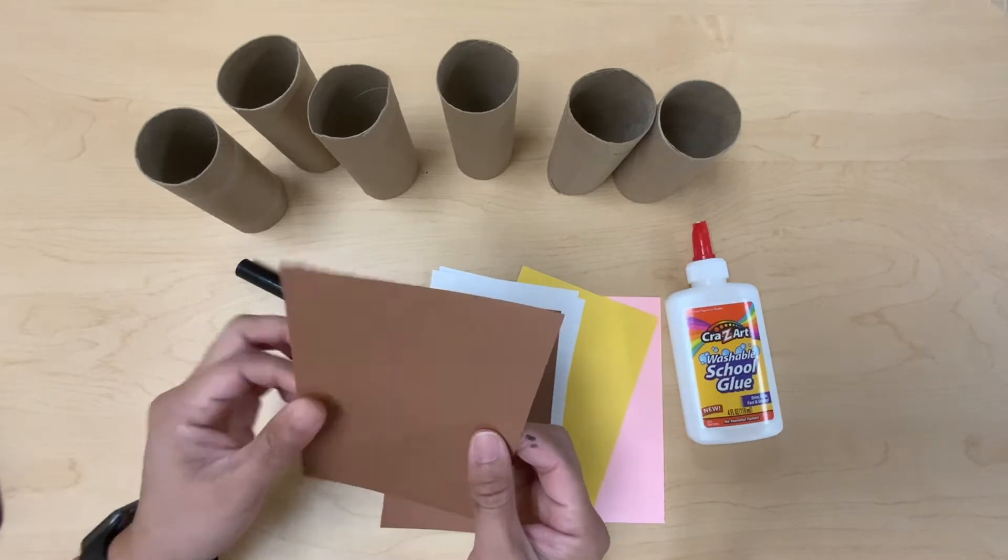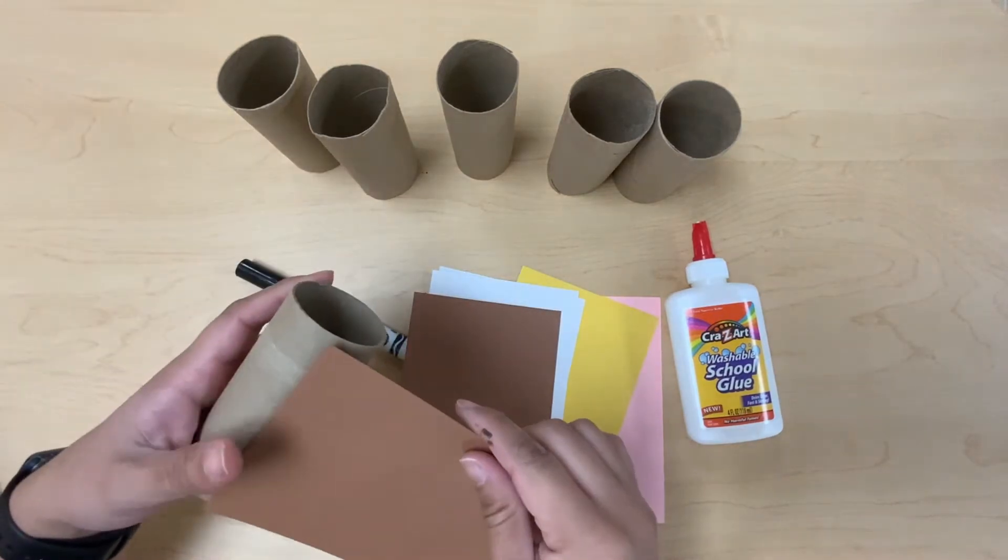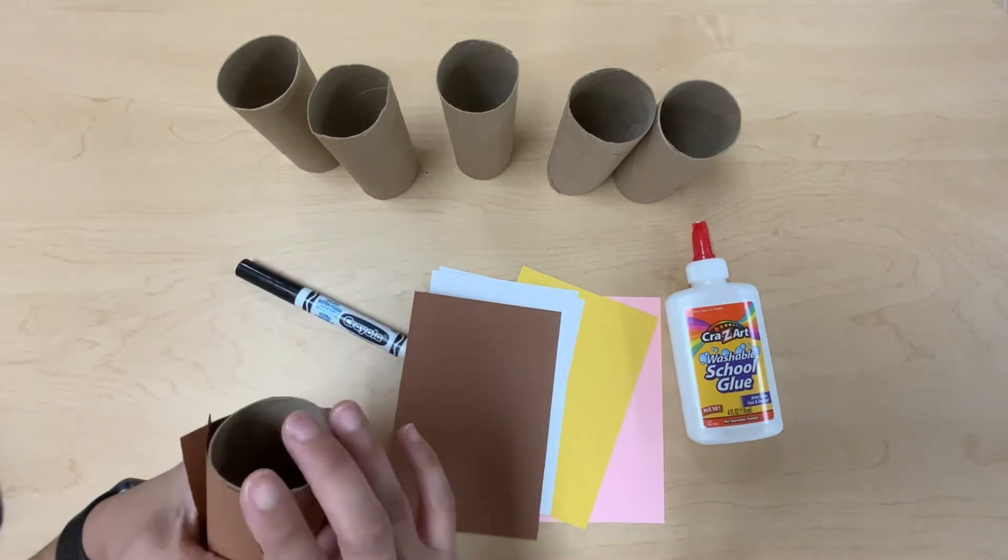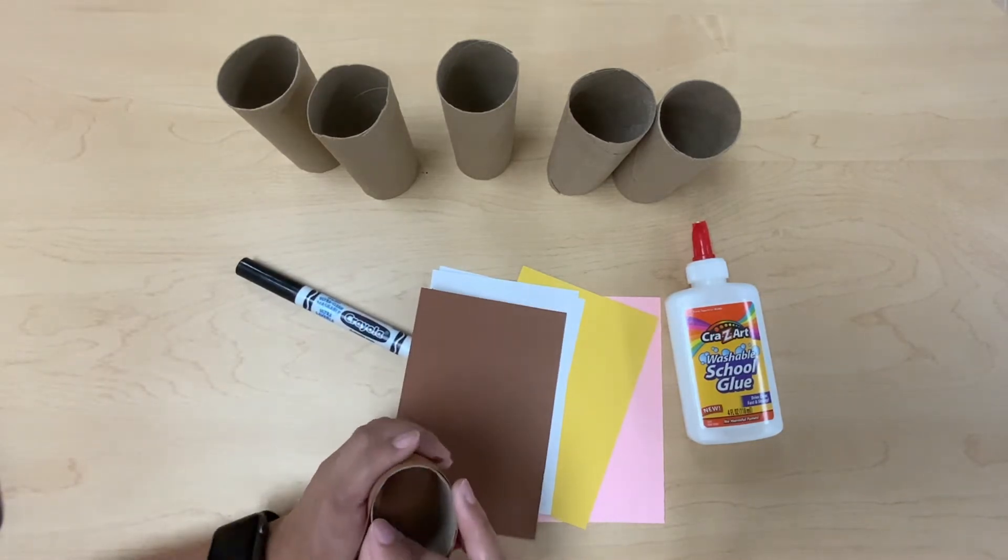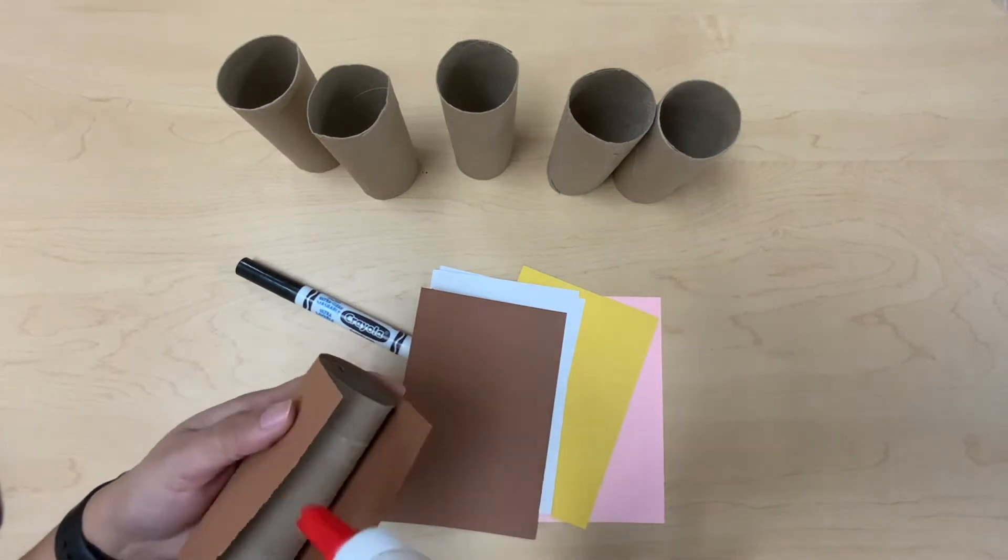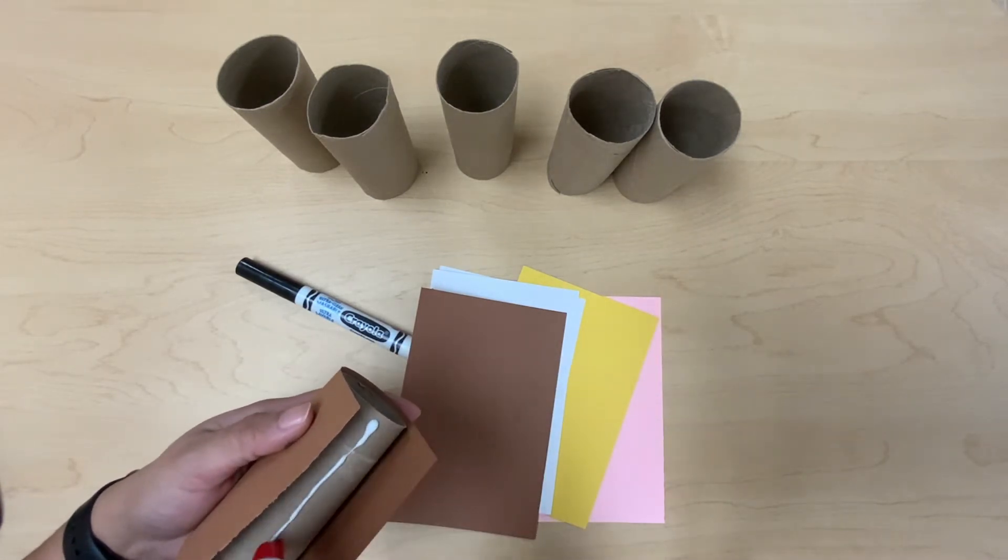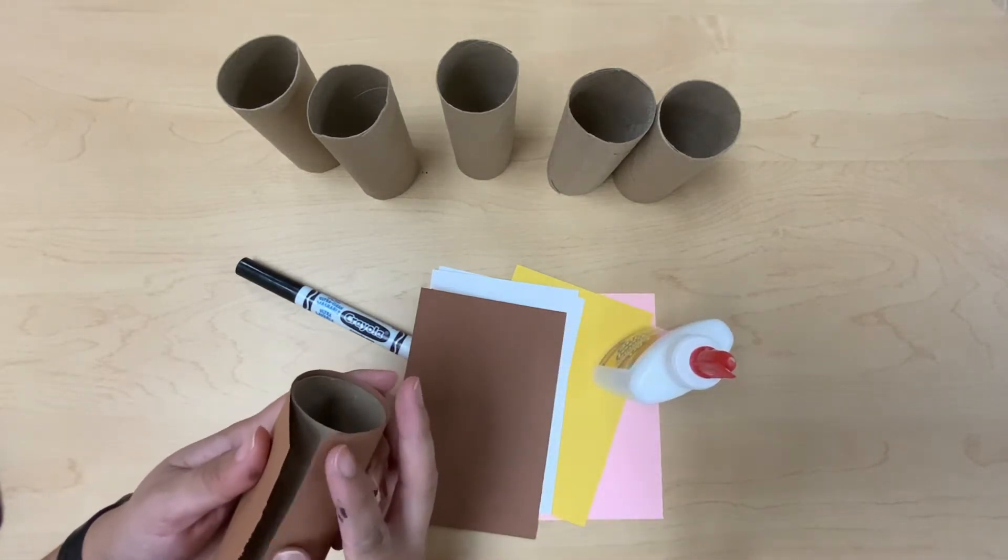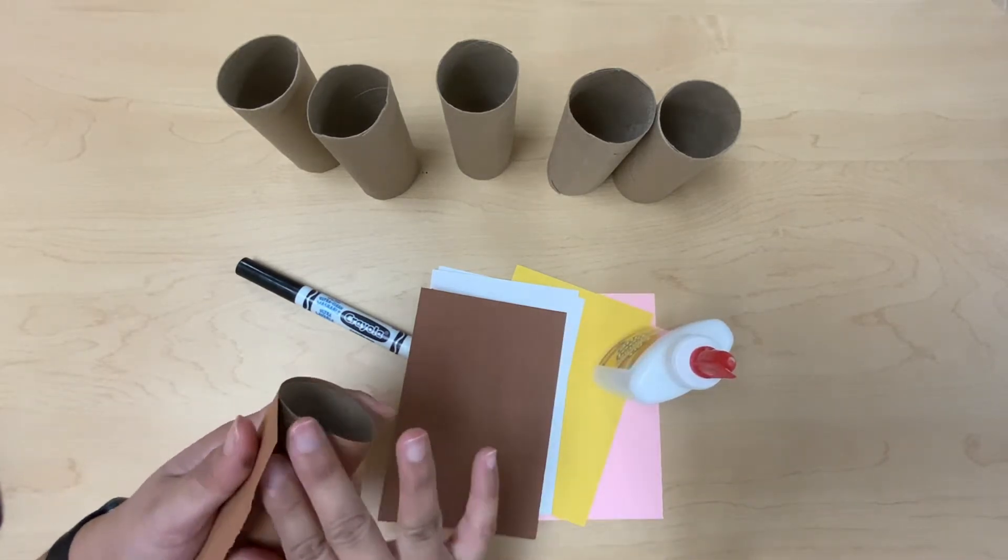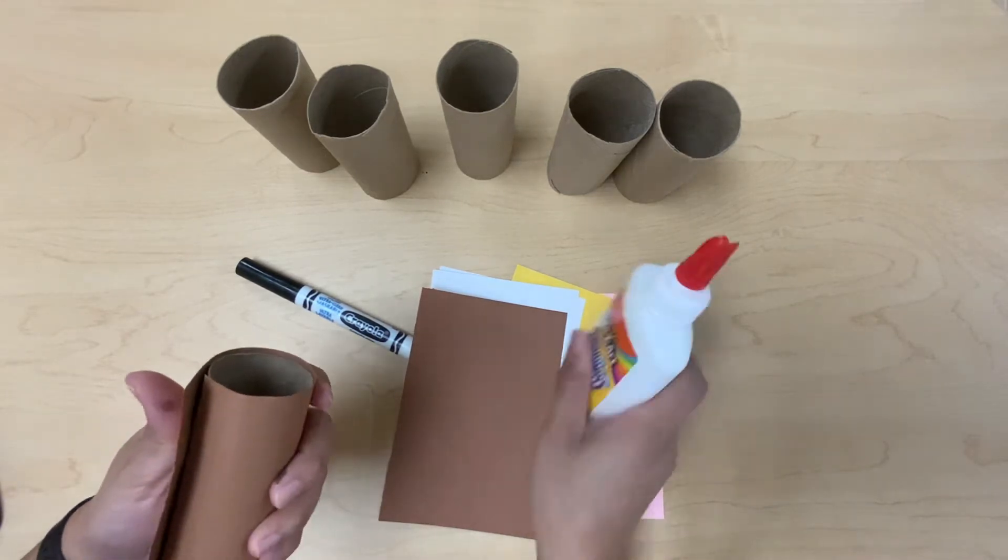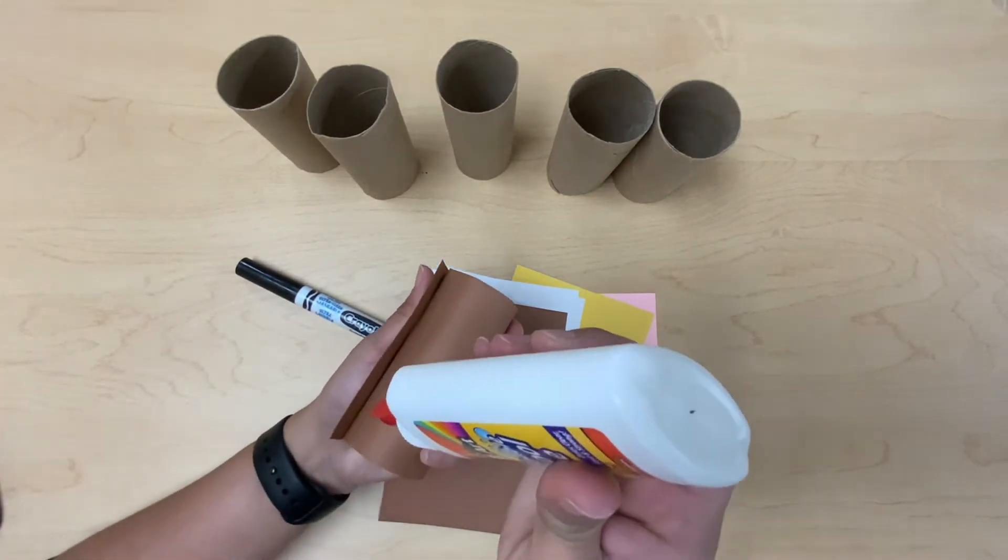I'm putting glue on the toilet tube, and I'm going to take one end of the construction paper and I'm gonna hold it onto the glue. And then I'm gonna put glue on the other end of the construction paper.